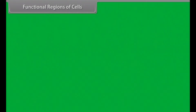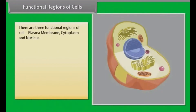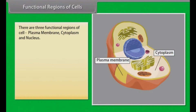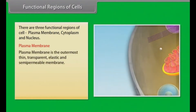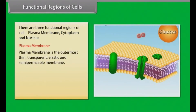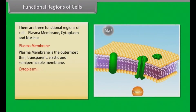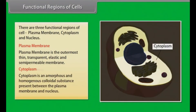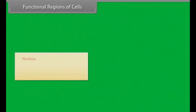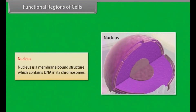Functional regions of cells. There are three functional regions of the cell: plasma membrane, cytoplasm, and nucleus. The plasma membrane is the outermost thin, transparent, elastic, and semi-permeable membrane. The cytoplasm is an amorphous and homogeneous colloidal substance present between the plasma membrane and nucleus. The nucleus is a membrane-bound structure which contains DNA in its chromosomes.